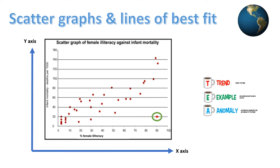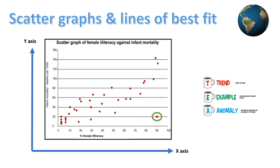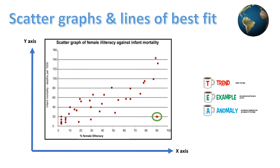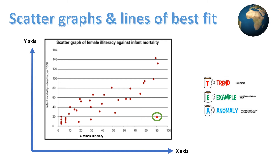The scatter graph example shown on the screen shows the relationship between female literacy on the x-axis at the bottom and infant mortality on the y-axis. Although we have no idea which dot represents which country, we can see a general trend with a positive correlation. This shows that as female illiteracy increases, infant mortality also increases.